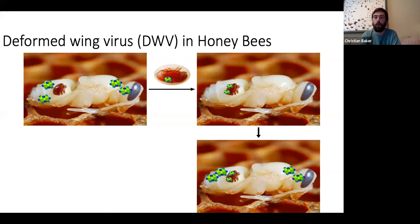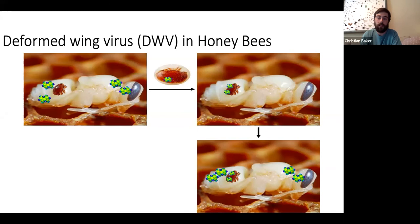Why do we care about this virus? As the name suggests, deformed wing virus causes the wings to be crippled in honeybees. This is especially important for an insect that has to travel flower to flower to gather food. The virus also shortens the lifespan of honeybees, which is critical in winter when the colony must stay strong and warm to survive. If many bees die off before the cold sets in, the whole colony may not survive.